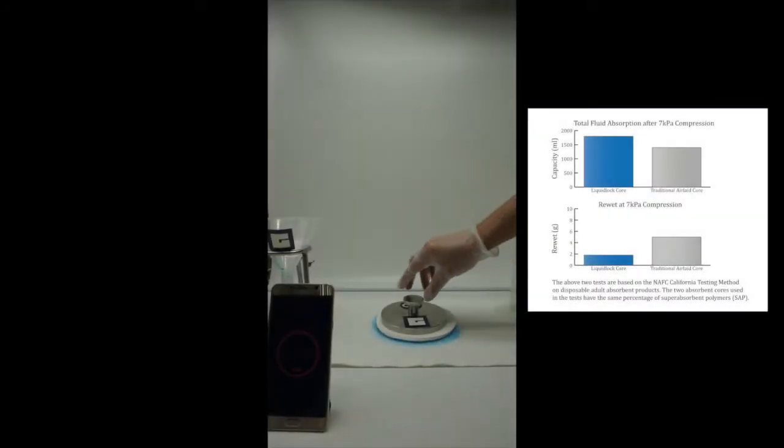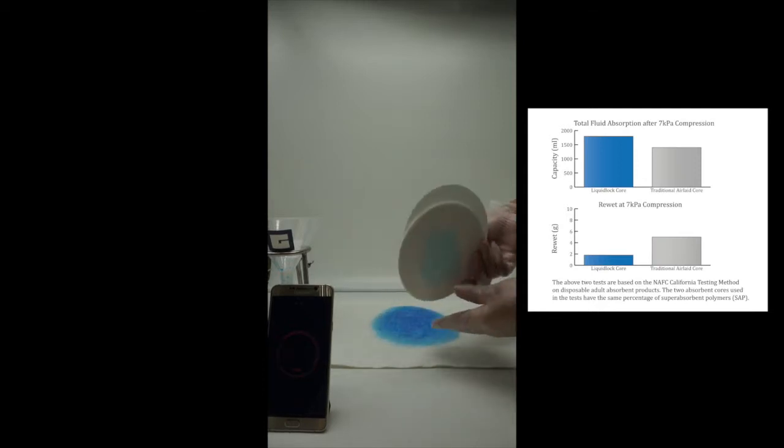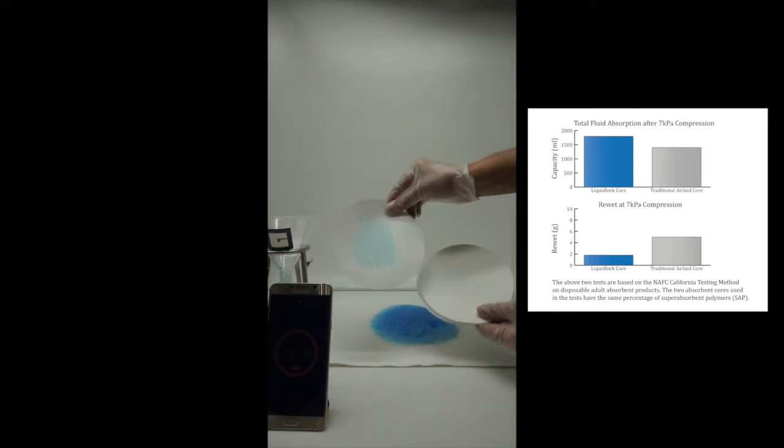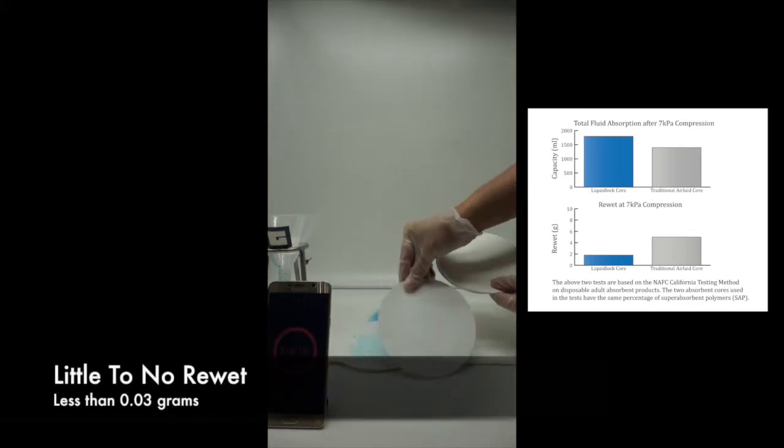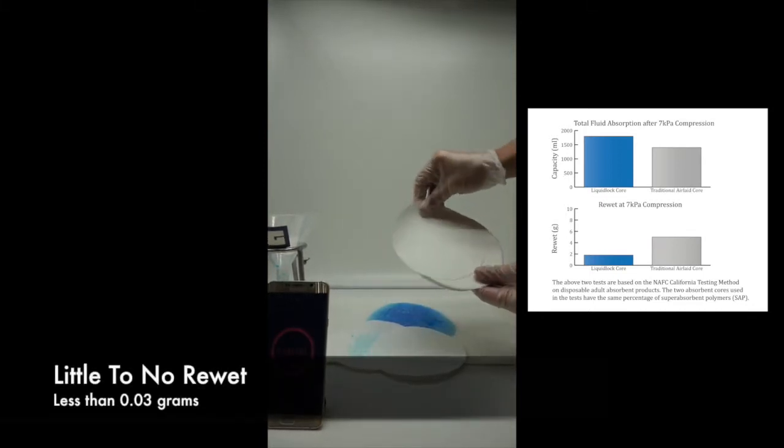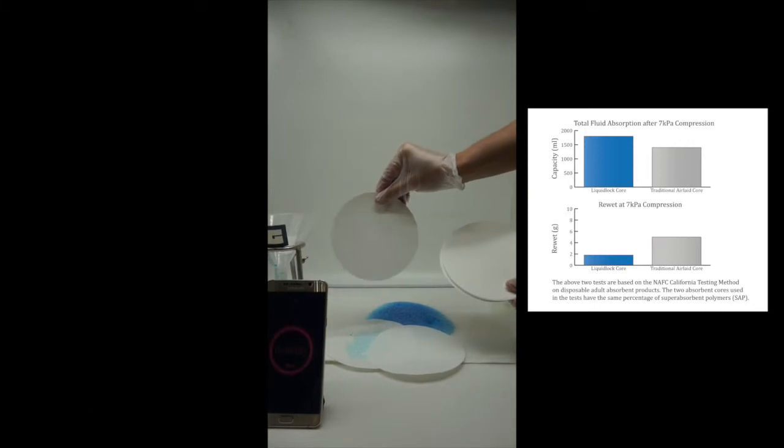Re-wet values under the same compression conditions show up to 150% improvement over traditional air lates. Total fluid absorption under 7 kPa compression under simulated tests like this show improved values of up to 25% over traditional air lates.